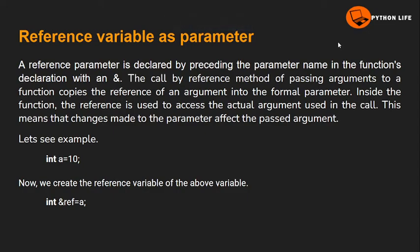Welcome to Python Live YouTube channel. I will show the reference variable as a parameter. The reference variable is an int. I will show the alias name or alternative name. For example, int a is equal to 10. Here we will create the alias name.